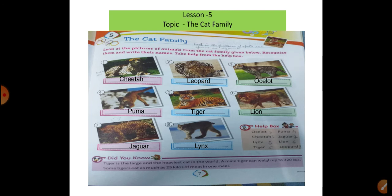Next, lesson number 5: cat family animals. Names are given in the helping box — see and observe. Write down the names for each picture: first is cheetah, second is leopard, third is ocelot, fourth is puma, fifth is tiger, sixth is lion, seventh is jaguar, eighth is lynx. Write the numbering first and then complete the exercise.